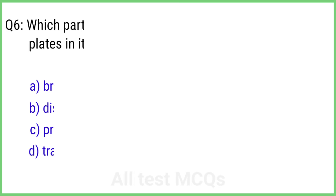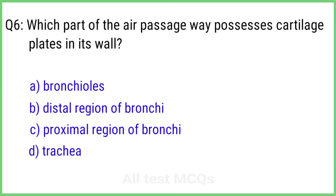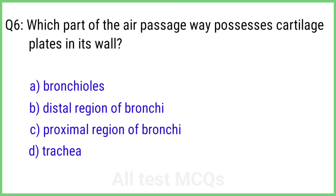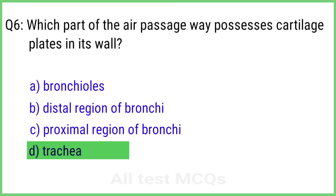Question 6. Which part of the air passageway possesses cartilage plates in its wall? The right answer is option D: Trachea.